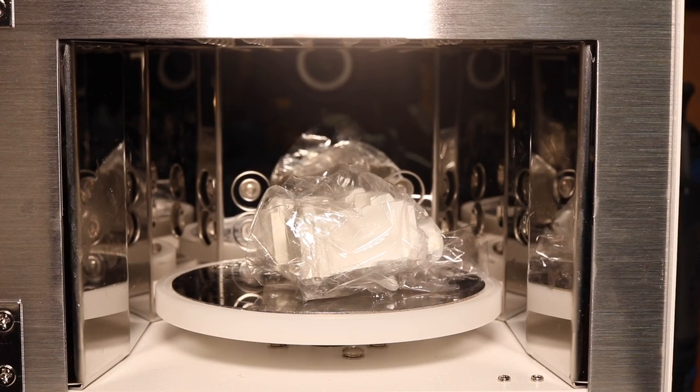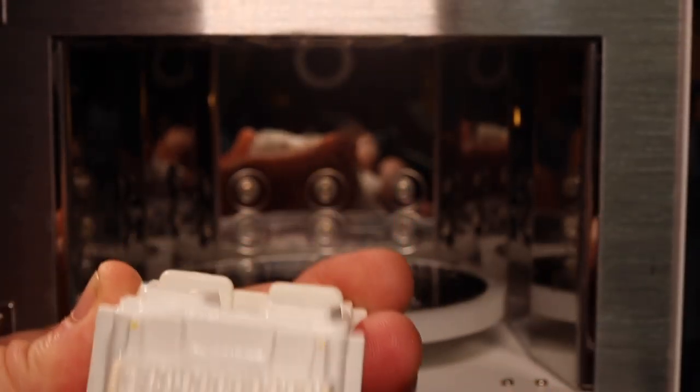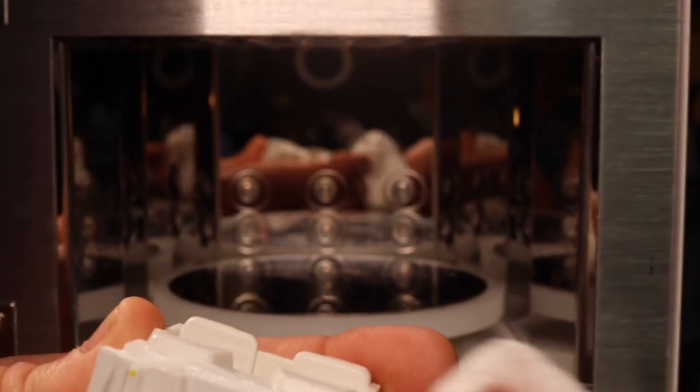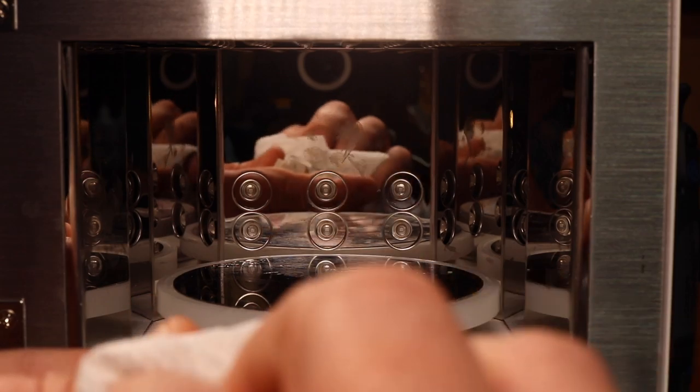Once the five minutes is up, I'll remove it from the oven and wipe it off. Now, I did notice some difference, not a huge difference, but the part wasn't bad to begin with. I think if I would have left it in there maybe for the full eight minutes on the timer, it would have done even better, but this is just a trial.